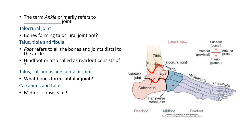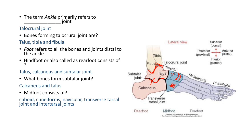The mid foot consists of the navicular bone, the cuboid bone, and the cuneiform bones — the medial three cuneiform bones. We have three cuneiform bones, one cuboid, and one navicular bone. These are called tarsal bones. The joints forming between the calcaneum and the cuboid — the calcaneocuboid joint — and the talonavicular joint also come under the mid foot, along with all the joints between the navicular and the cuneiform, cuneiform and cuboid, and cuboid and navicular bone.